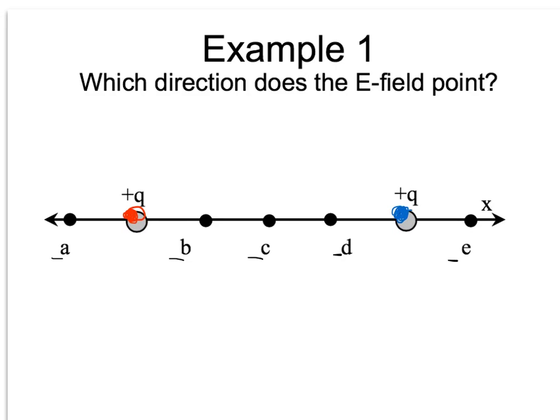These are both positive charges, and remember that field lines point away from positive charges. Notice that the closer you are to the charge, the more dense the field lines are, and when you get farther away, the field lines are more spread out. That means near the charge there's a strong field, and away from the charge there's a weak field.